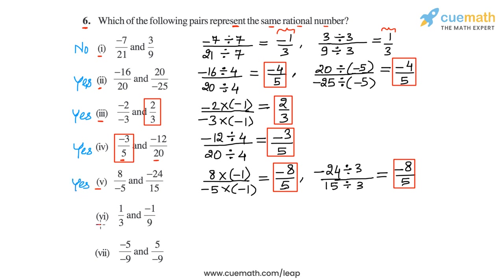In part 6, we have 1/3 and -1/9. Both of these are already in standard form and they are not equal, so this pair does not represent the same rational number. The answer is no for part 6.